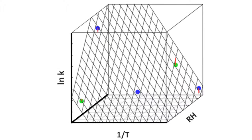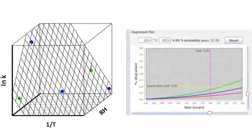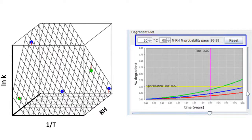Multidimensional analysis is employed to more accurately estimate stability and provide a quantitative probability of passing at the projected shelf life under any storage condition.